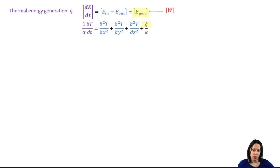The E dot gen term is the rate of energy generation in terms of watts. The Q dot term in the heat diffusion equation is the volumetric heat generation term and it's E dot gen divided by the volume.